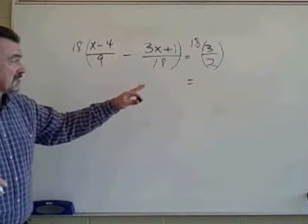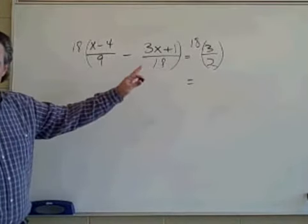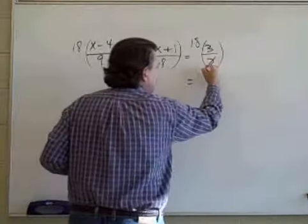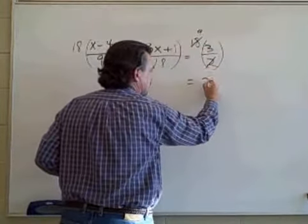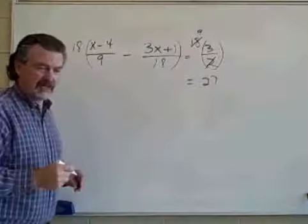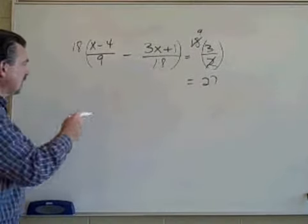There on the left, excuse me, on the right side, when we multiply, we can do some canceling first. 2 goes into 18 9 times, so 9 times 3, or 27 is left for us.